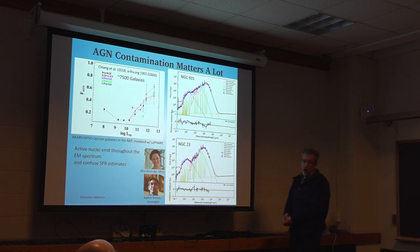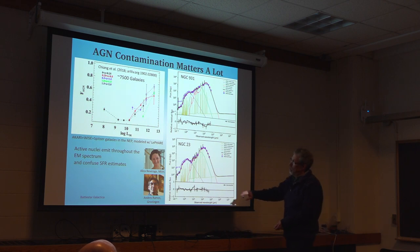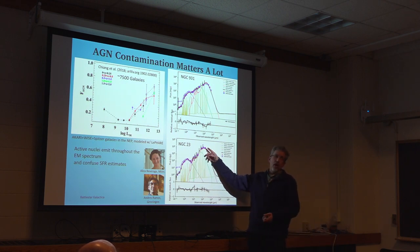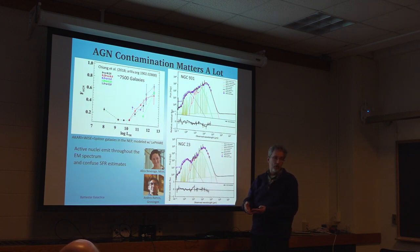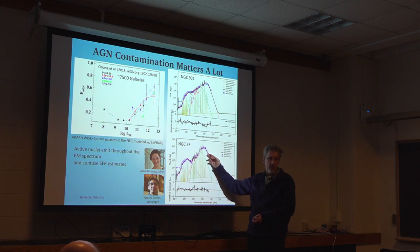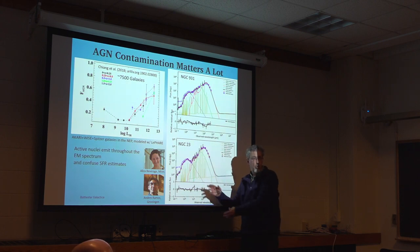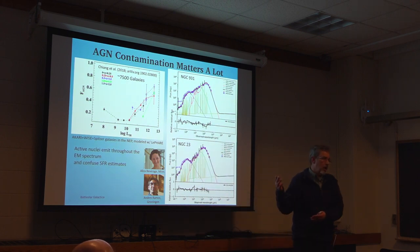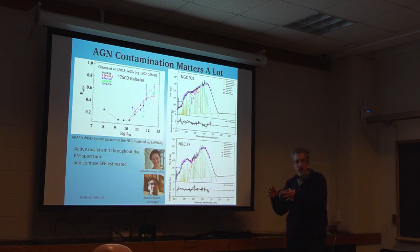One thing worth noting is that here in the mid-IR there's kind of a poverty of densely sampled data. We have WISE, we have Spitzer MIPS, we have IRAS, but there's just not a lot of broadband data to sample the mid-IR SEDs. So in this regime where star formation begins to ramp up and where AGN are strongest, there are not a lot of data points to discriminate among them.